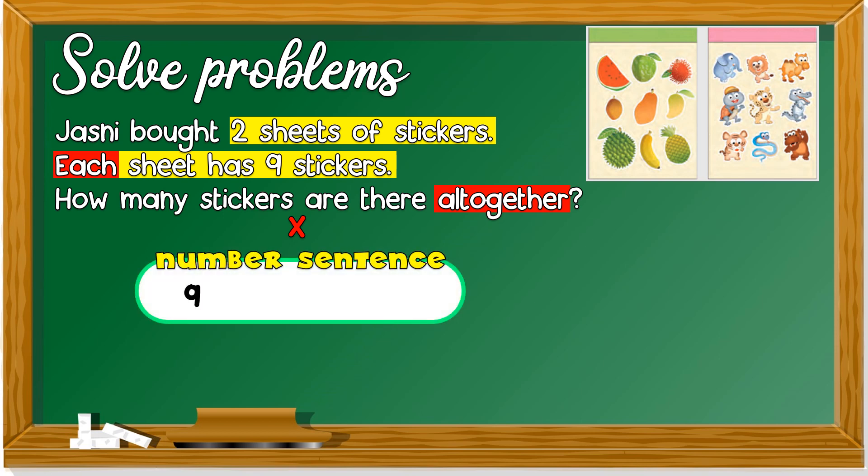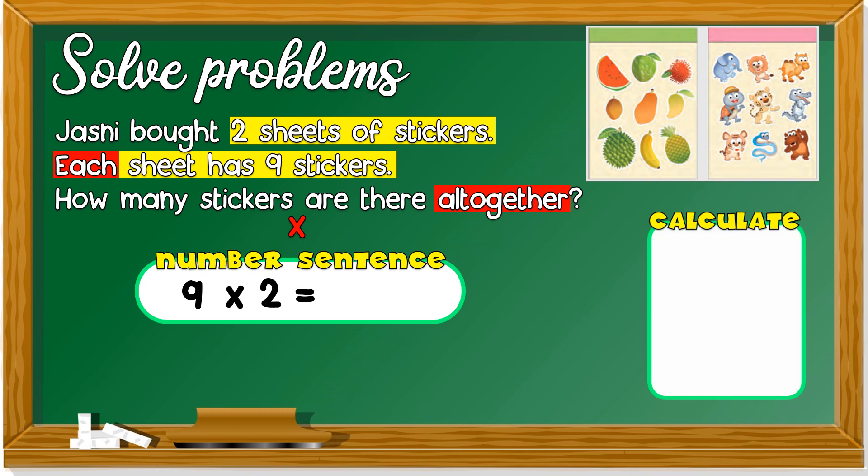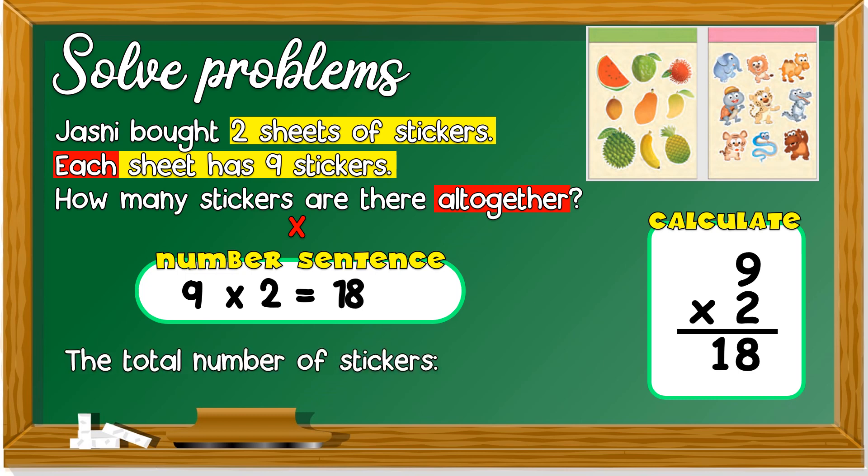The number sentence is 9 × 2 = ? Then you do your calculation. 9 × 2. You can sing the song. Two, four, six, eight, ten, twelve, fourteen, sixteen, eighteen. 9 × 2 = 18. The total number of stickers is eighteen.